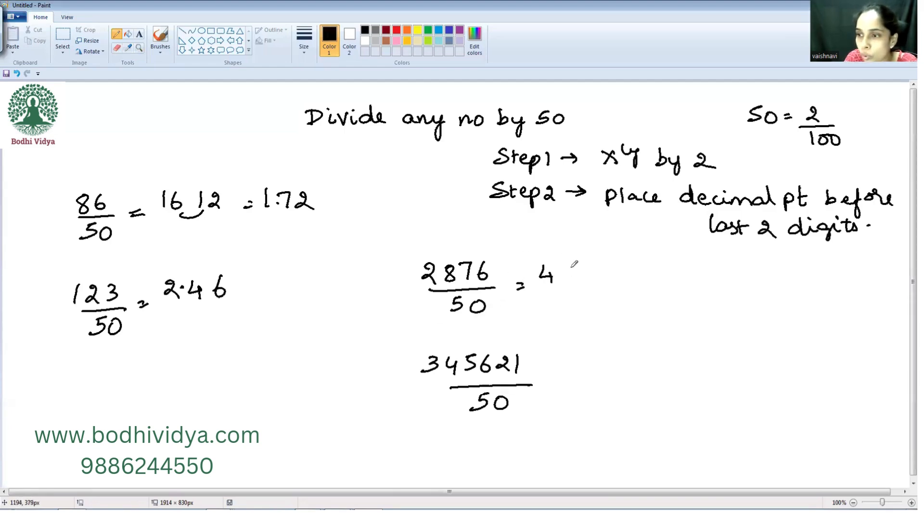Now it is 4, 16, 14, and 12. So it is 5, 7, 5, 2. Place the decimal before the last 2 digits, so our answer is 57.52.